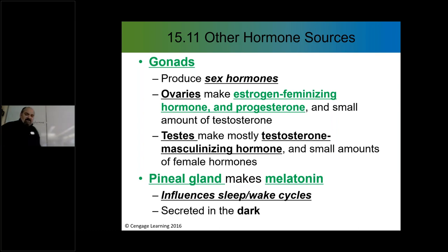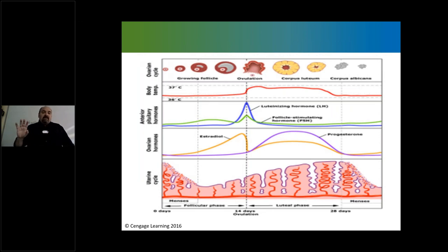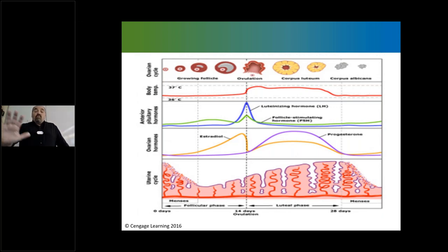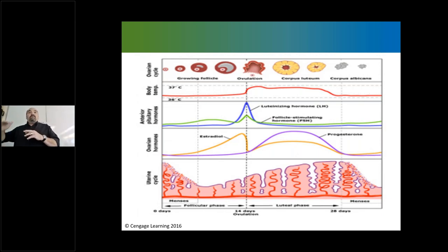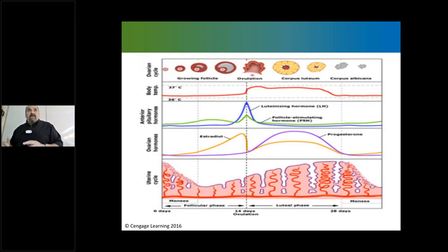These hormones produced by the reproductive system can affect what goes on as far as the production of a mature egg and mature sperm in order to allow for possible fertilization and the reproduction of our species. Depending upon what goes on with levels of these hormones — because the hormones will spike, they will peak — different events will happen. We'll go into more detail with that when we get into the reproductive chapters.